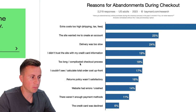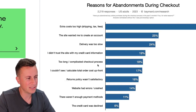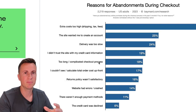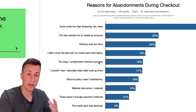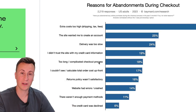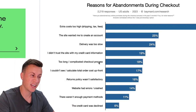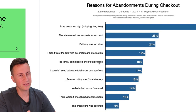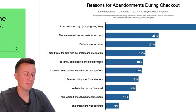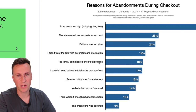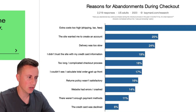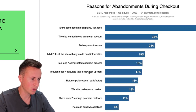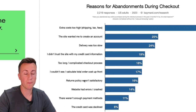18%: too long or complicated checkout process. Shouldn't be a major issue on Shopify. There are apps where when somebody hits the add-to-cart button, it takes them straight into the checkout process rather than the cart page — one less page to load, saves a couple of seconds. Test it on your own site. You should also be able to calculate the total order cost upfront, which again shouldn't be an issue.